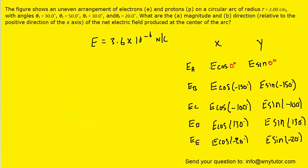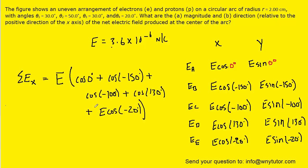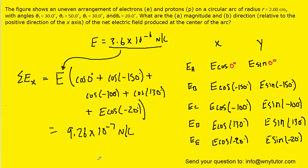Next, we add up all five x components to get the total electric field in the x direction. Remember that E equals 3.6 times 10 to the minus 6. It may be easier to factor out E and multiply by the sum of all the cosines of those angles. Substituting in 3.6 times 10 to the minus 6 for E and processing the calculation, you should get roughly 9.26 times 10 to the minus 7 newtons per coulomb — that's the total electric field in the x direction.